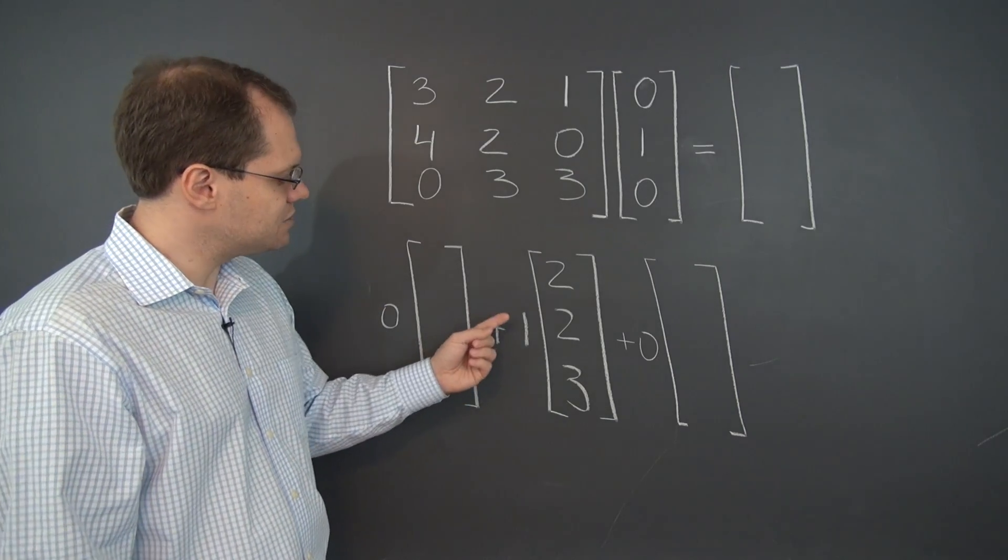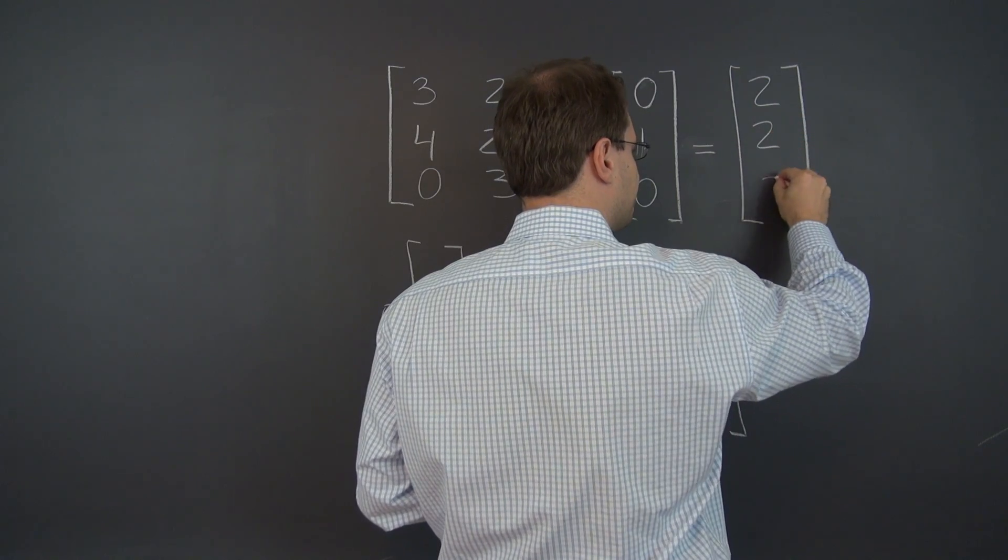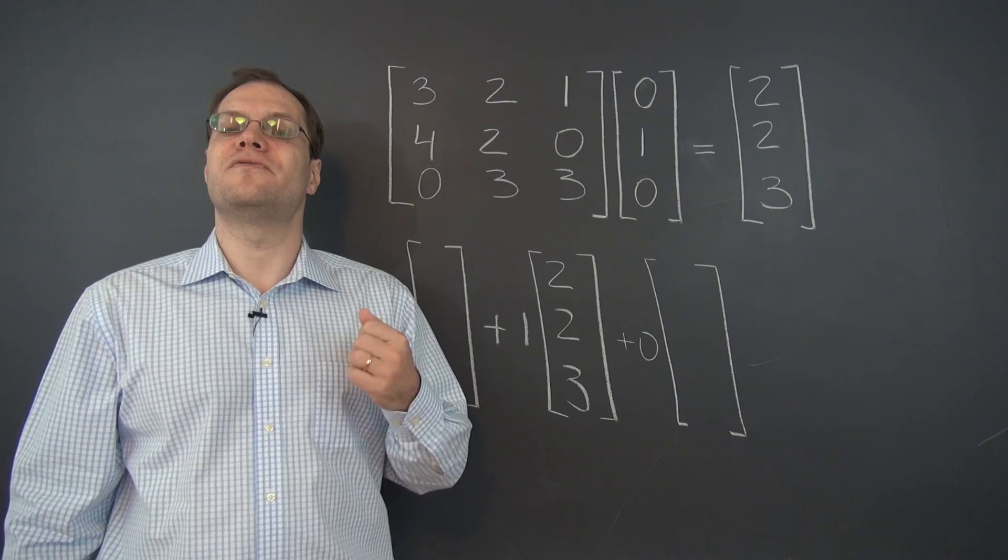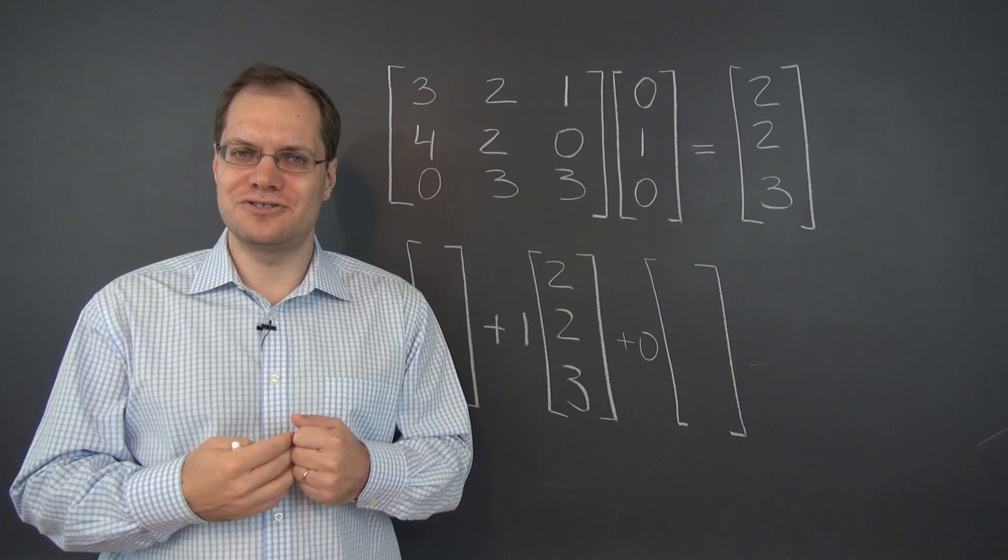And the result is of course two, two, three. So let's write it in: two, two, three. So that's the mechanical approach to finding matrix products, which is a good approach and you should always keep the mechanical approach in mind.